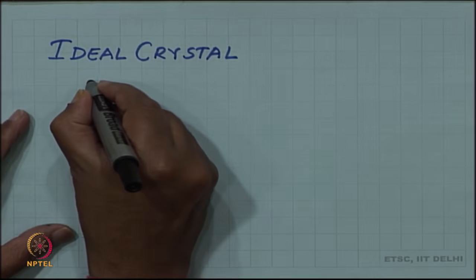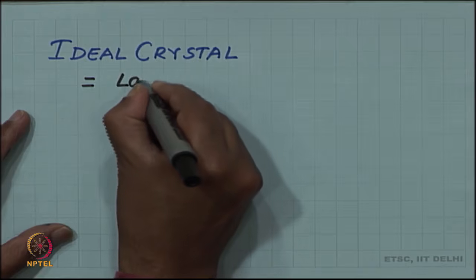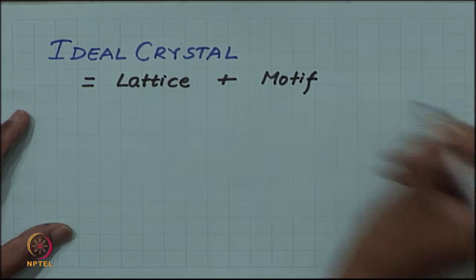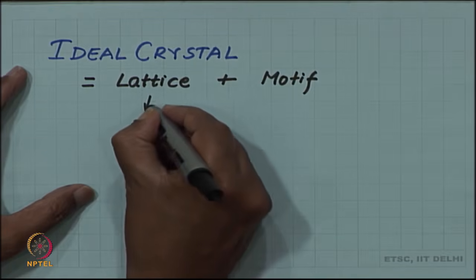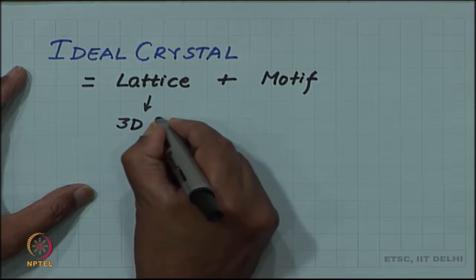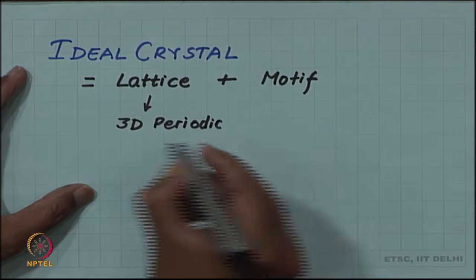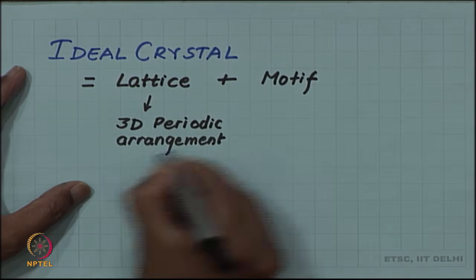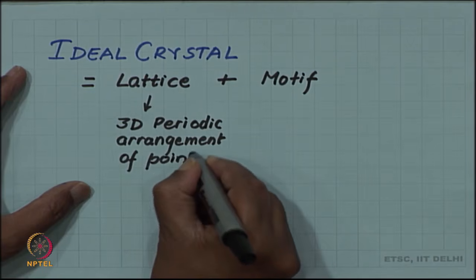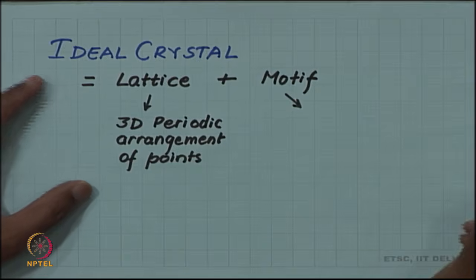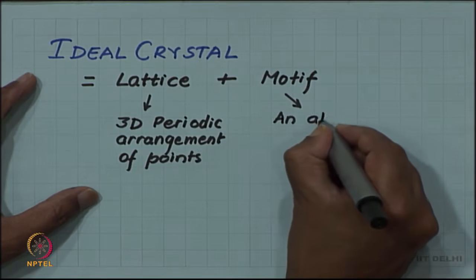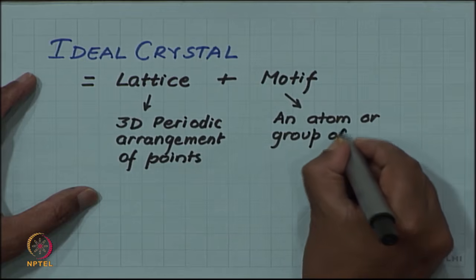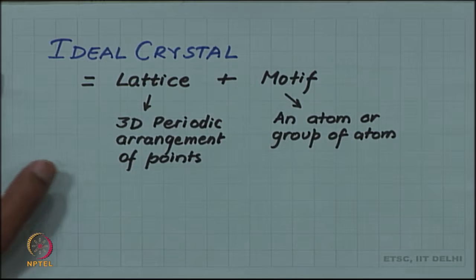What we have been discussing till now is the ideal crystal, which we discussed in terms of lattice and a motif. We said that the lattice was a 3D periodic arrangement of points, 3-dimensional periodic arrangement of points and motif, then on each of these points we put an atom or a group of atoms, atom associated with each lattice point.